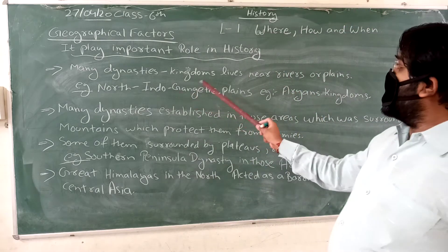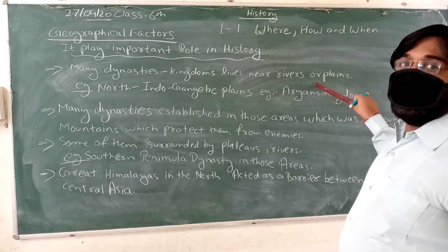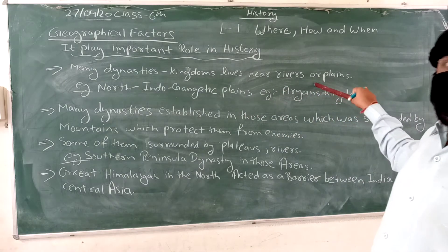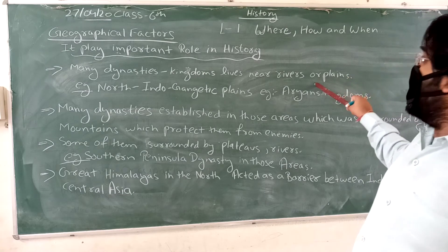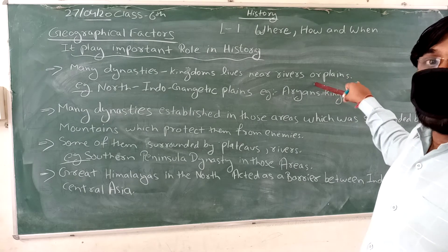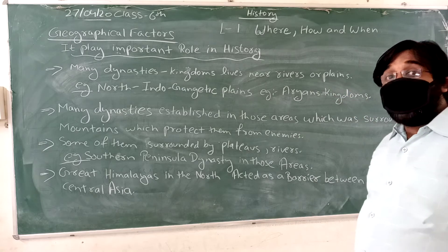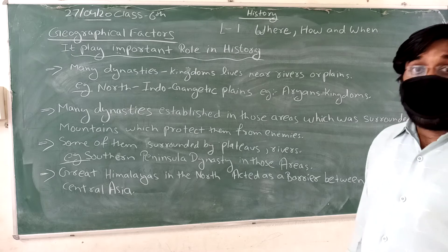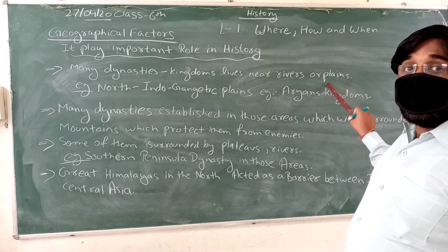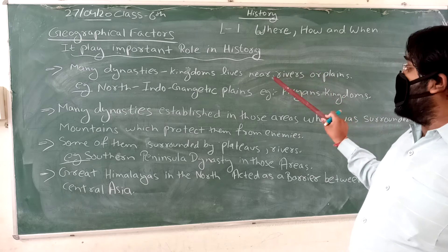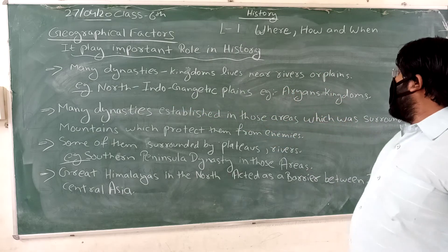Many dynasties and kingdoms lived near rivers or plains. All the dynasties that existed settled near rivers or plains — places where cultivation of the earth was easy and crop fertilization was easier. So they established their dynasties near rivers or plains, like the Indo-Gangetic plain. Example: Aryan kingdoms.